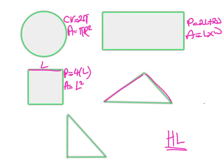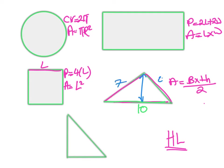Area of a square is l squared. This is a triangle, so perimeter is just the three sides added up. The area of a triangle is base times perpendicular height all over 2. So if the base is 10, we need the perpendicular height — knowing the other two sides, say 7 and 4, doesn't help us find the height.